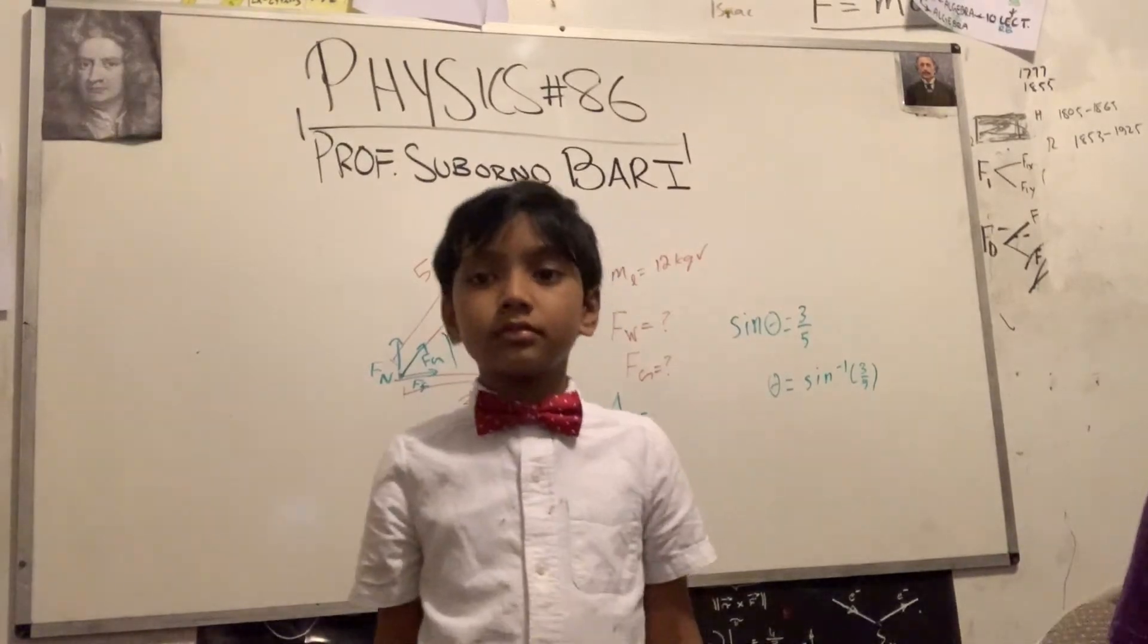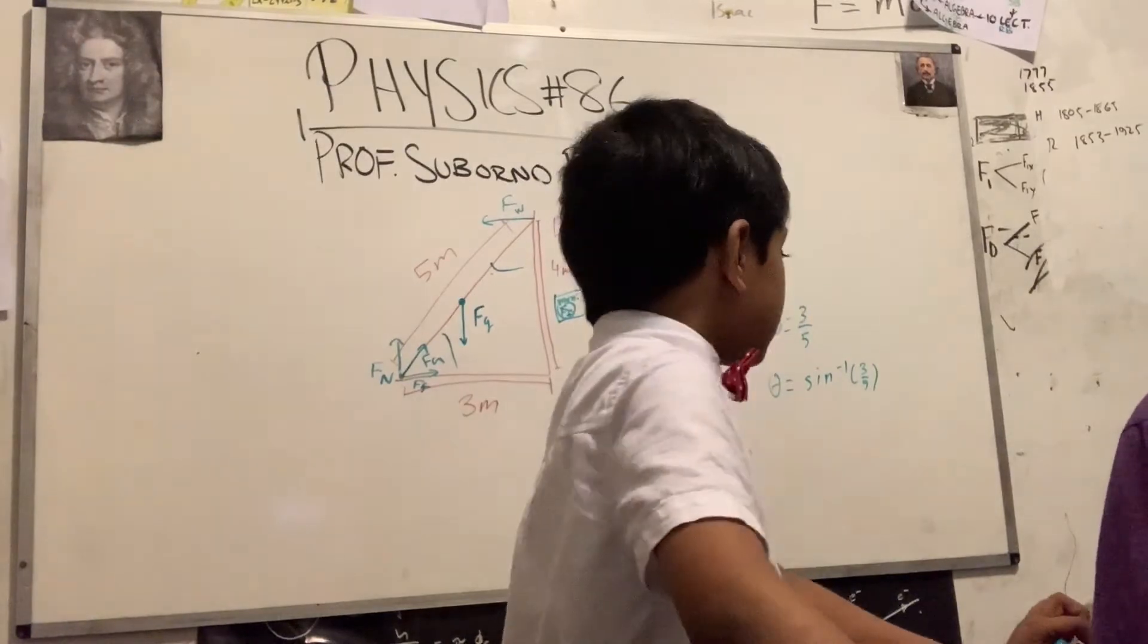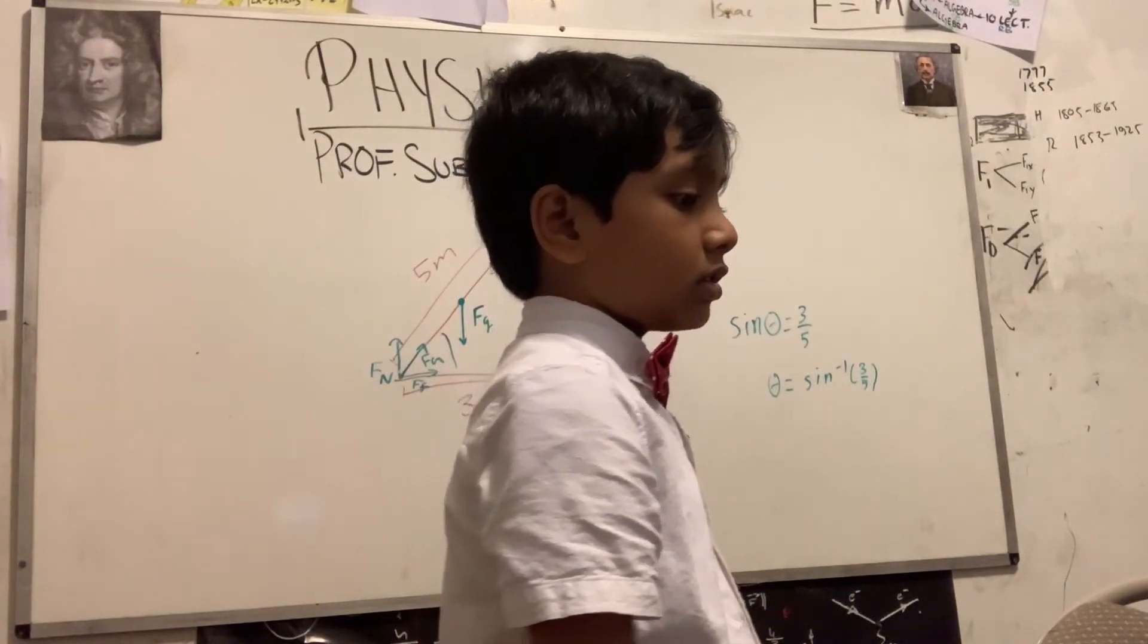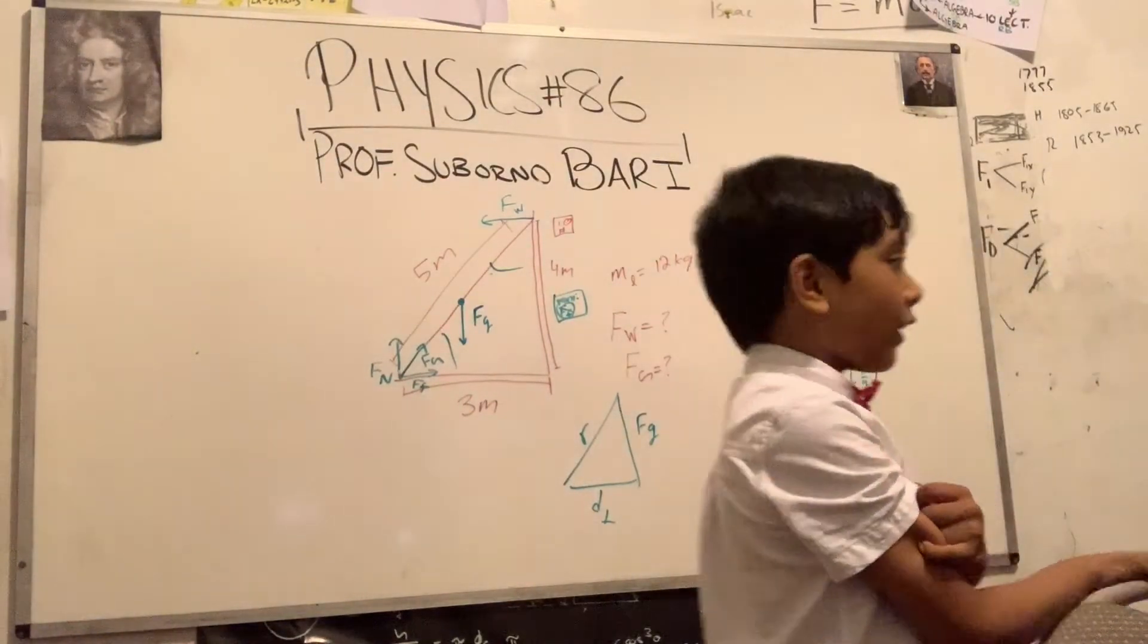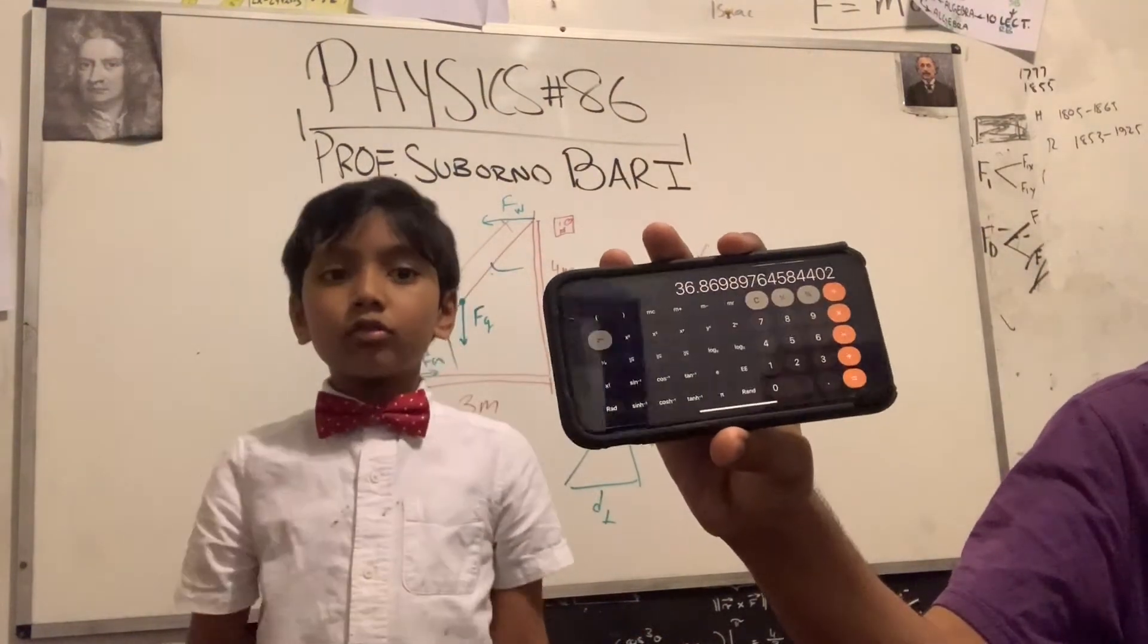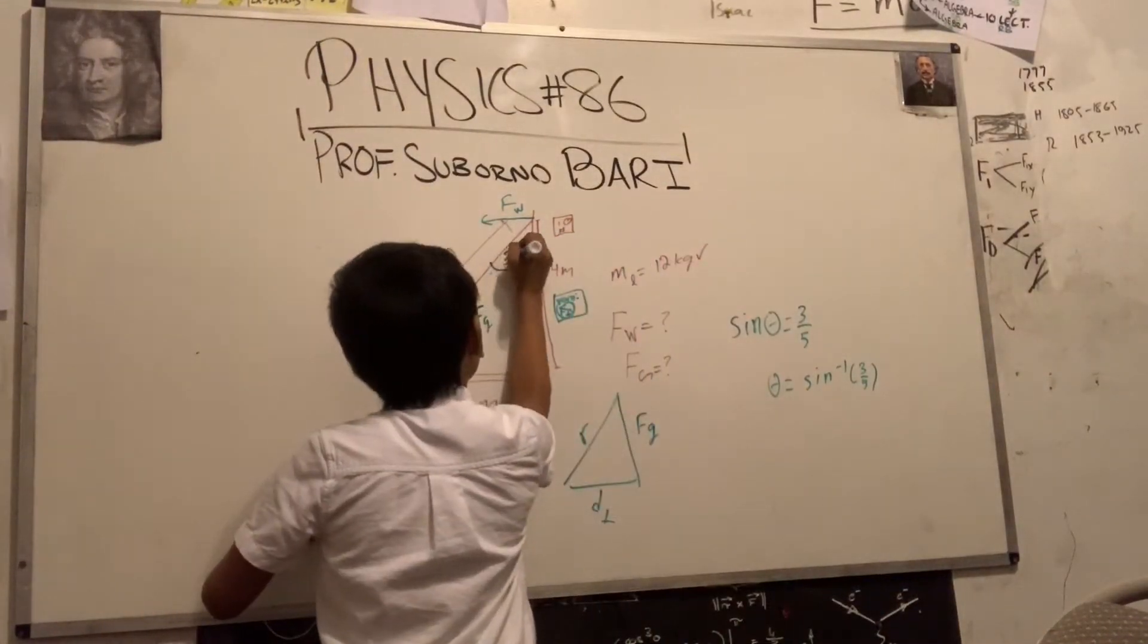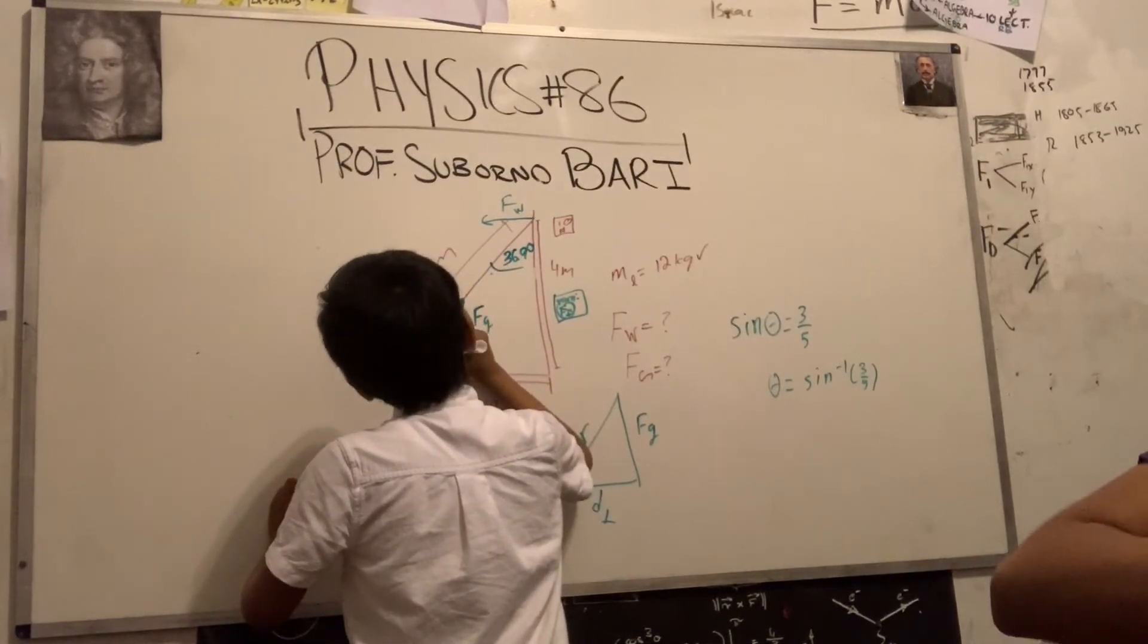Yes, professor, sin inverse of 3 fifths. You mean arc sin of 0.6? You don't have to say it so fancily. So 36.869 degrees, or I'm just going to call it 36.9 degrees. Now we can figure out the other angles easily, and this would be 53.1 degrees. So now we know our angles.